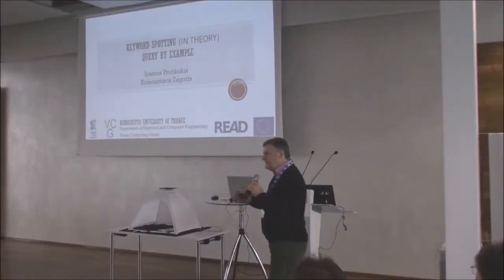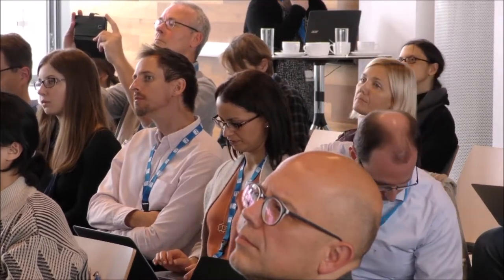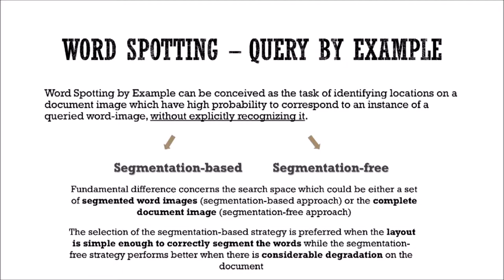As the word implies, keyword spotting is the action of identifying words in a document or a collection when you query by a string. What I am going to talk about is querying by a word image — taking an example image which identifies a word, and retrieving similar occurrences in a collection or document related to that query. In my talk there will be a trade-off between technical description and basic ideas.